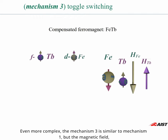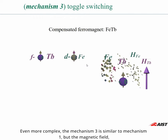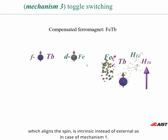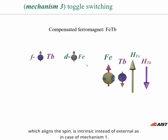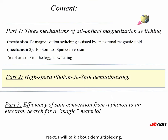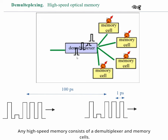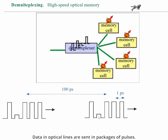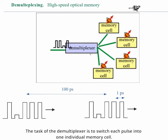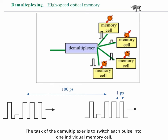Even more complex, mechanism 3 is similar to mechanism 1, but the magnetic field which aligns the spins is intrinsic instead of external as in case of mechanism 1. Next I will talk about demultiplexing. Any high-speed memory consists of a demultiplexer and memory cell. Data on optical lines are sent in packages of pulses. The task of the demultiplexer is to switch each pulse into one individual memory cell.